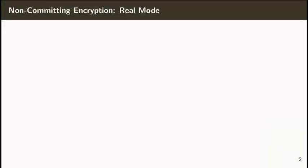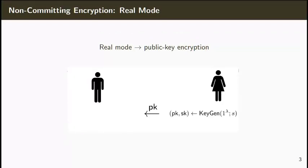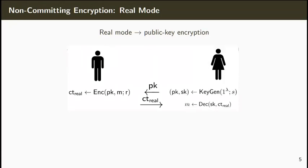Non-committed encryption is a special type of encryption which has two modes. In the first one, which we'll call the real mode, NCE behaves essentially as a standard public key encryption. Here we assume two parties, Alice and Bob. Alice starts by generating a pair of public and secret keys using random coins S. Bob generates a ciphertext using the encryption algorithm for message M and random coins R. Finally, Alice can decrypt the ciphertext using the secret key.